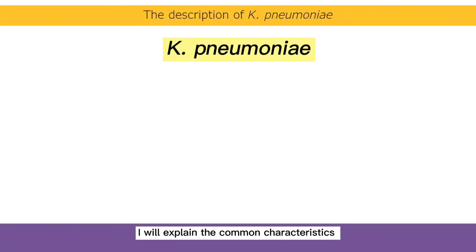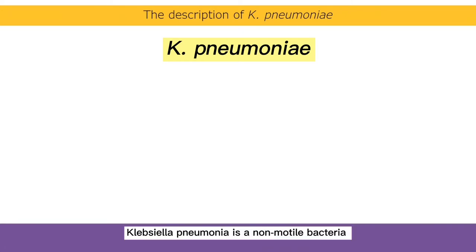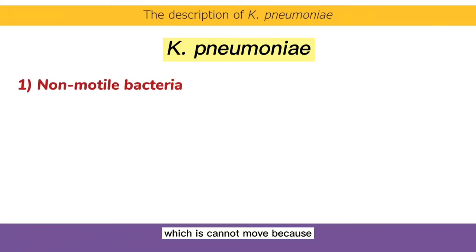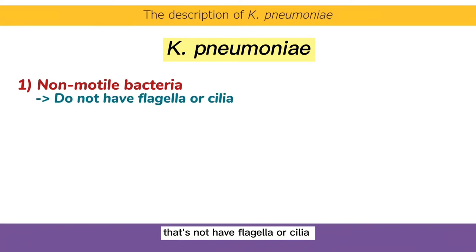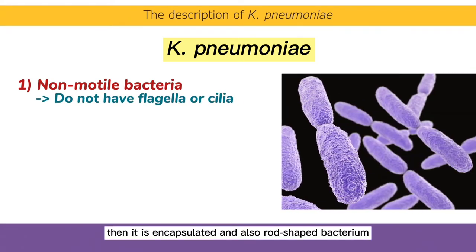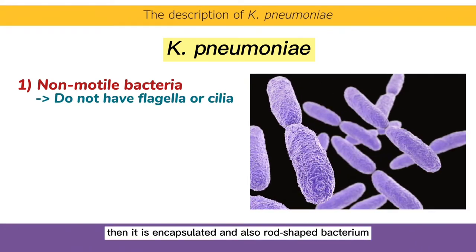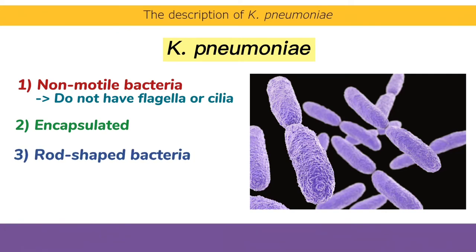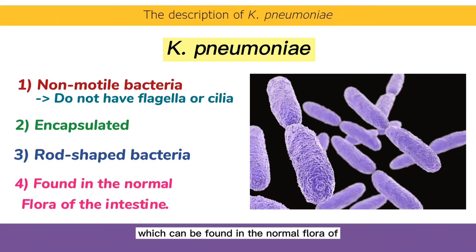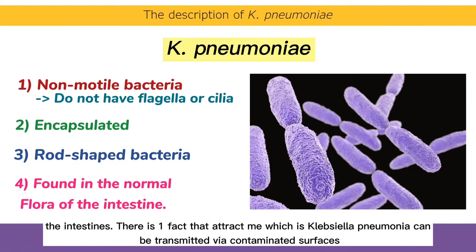The common characteristics of Klebsiella pneumoniae: it is non-motile, meaning it cannot move because it does not have a flagellum. It is encapsulated and also rod-shaped, and can be found in the normal flora of the intestines.